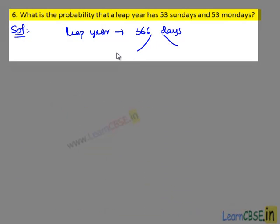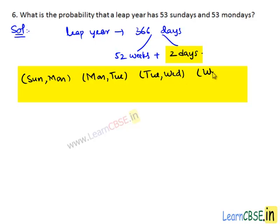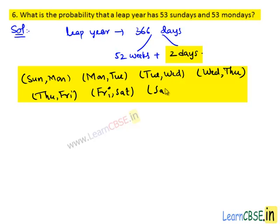This can be written as 52 weeks plus 2 days. These two days can be Sunday-Monday, Monday-Tuesday, Tuesday-Wednesday, Wednesday-Thursday, Thursday-Friday, Friday-Saturday, or Saturday-Sunday.